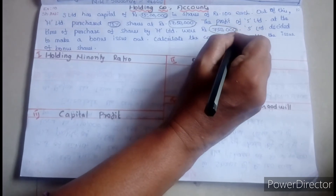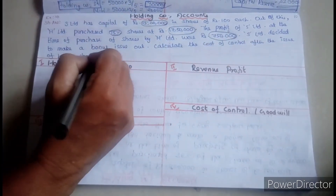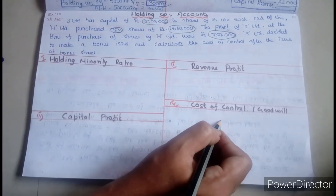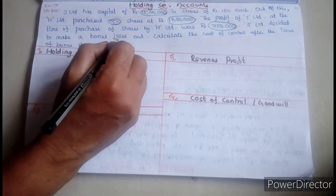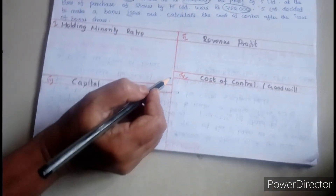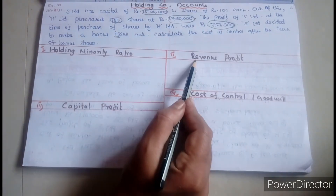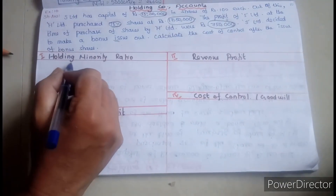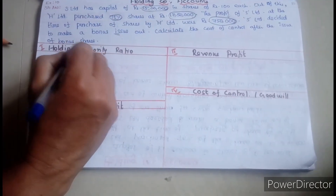The profit of S Limited at the time of purchase of shares by H Limited was the acquired profit. S Limited is to make a bonus issue. Calculate the cost of control after the issue of bonus shares. Cost of control: capital profit — this is the fourth step in the cost of control.